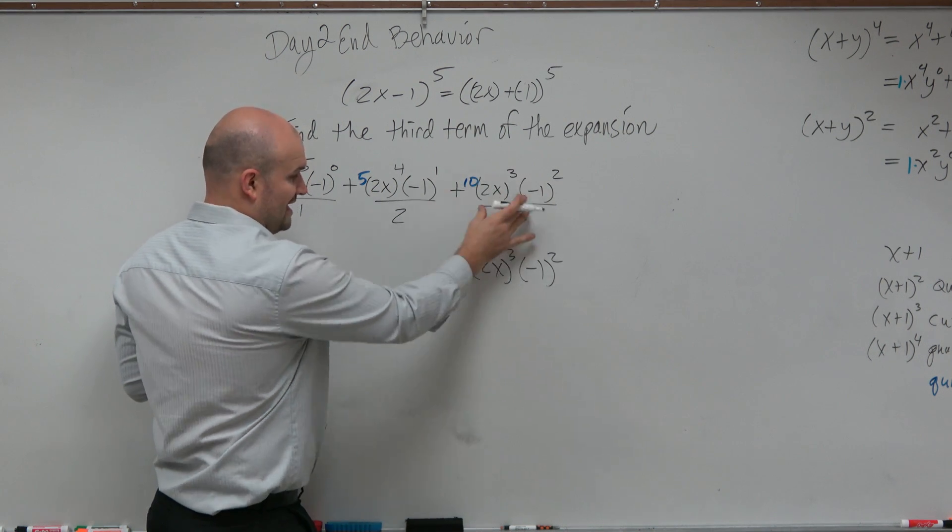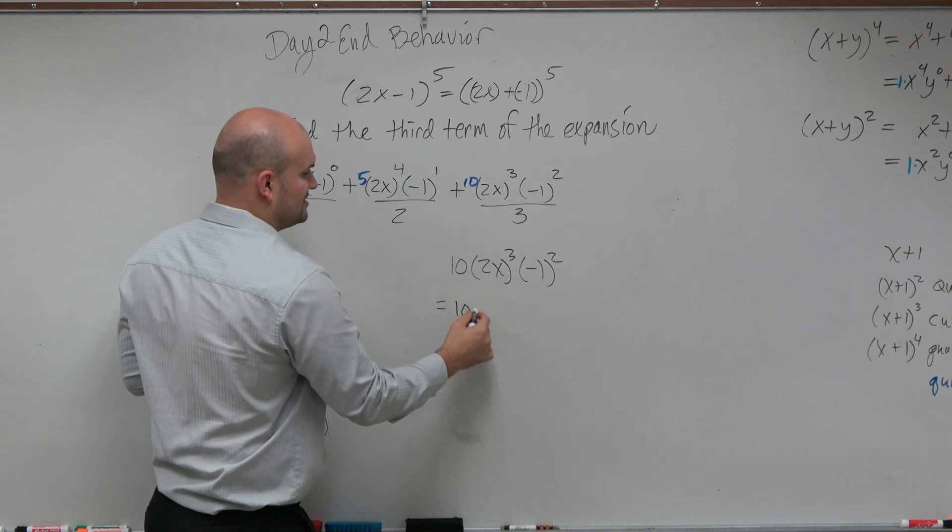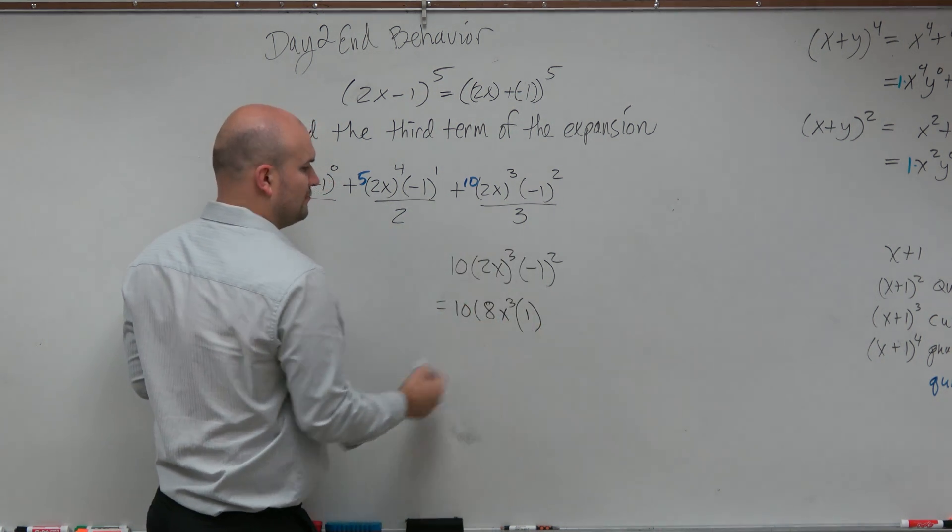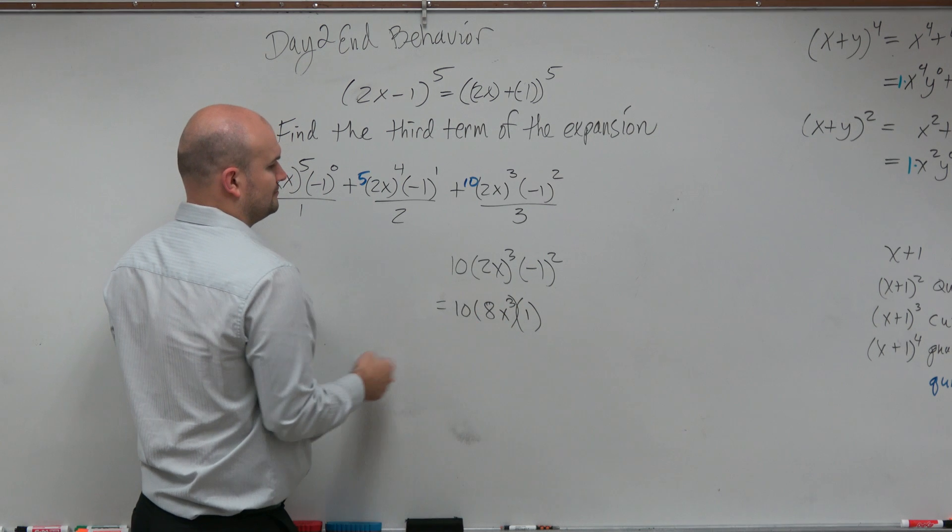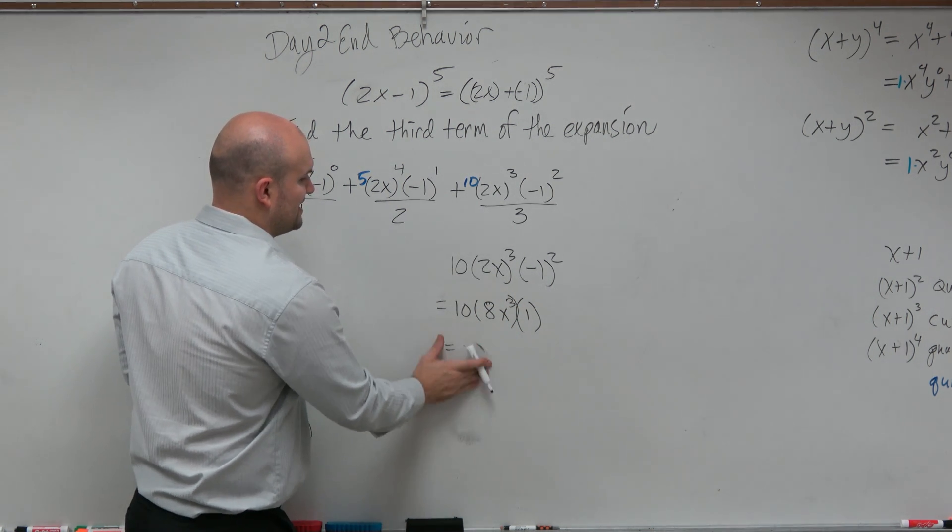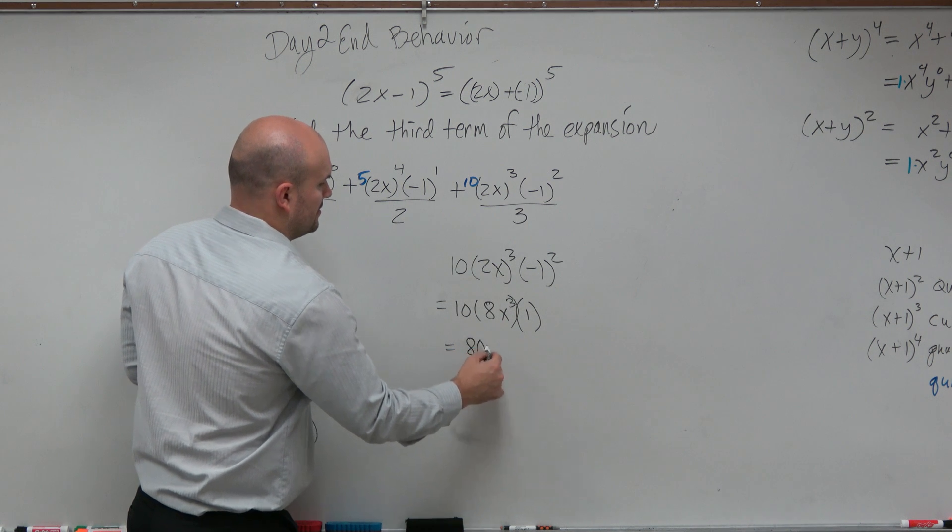So therefore, if that is our third term, we can simplify this to 10 times 8x cubed. Negative 1 squared is just going to be a positive 1, and therefore we would get, I'm sorry, 10 times 8 is going to be 80x cubed.